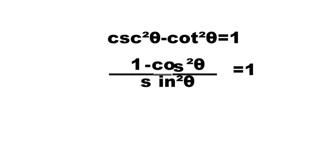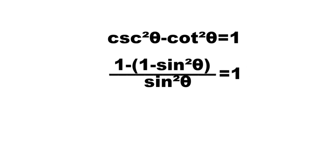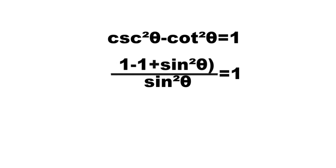This is now 1 minus cosine squared theta over sine squared theta, equal to 1. From Pythagorean identities, cosine squared theta is equal to 1 minus sine squared theta. Simplifying, we have 1 minus 1 plus sine squared theta over sine squared theta is equal to 1.